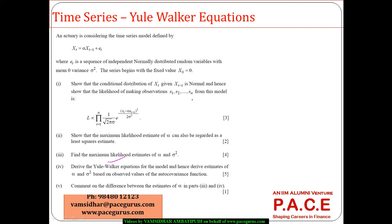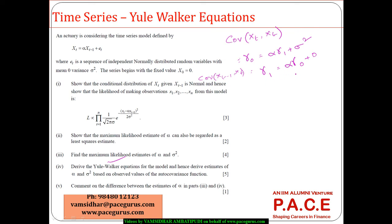Now deriving the Yule-Walker equations for the AR(1) model. We know xt equals alpha times xt minus 1 plus ET. Taking the covariance of xt with xt gives gamma 0 equals alpha times gamma 1 plus sigma squared. Taking the covariance of xt minus 1 with xt gives gamma 1 equals alpha times gamma 0. Substituting back, gamma 0 equals alpha squared times gamma 0 plus sigma squared.